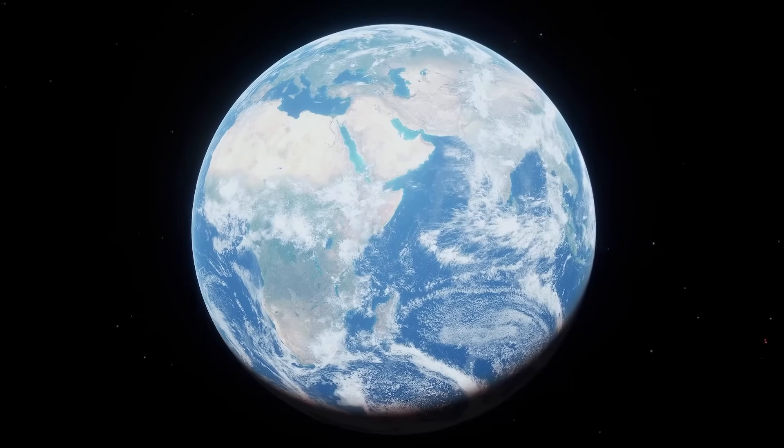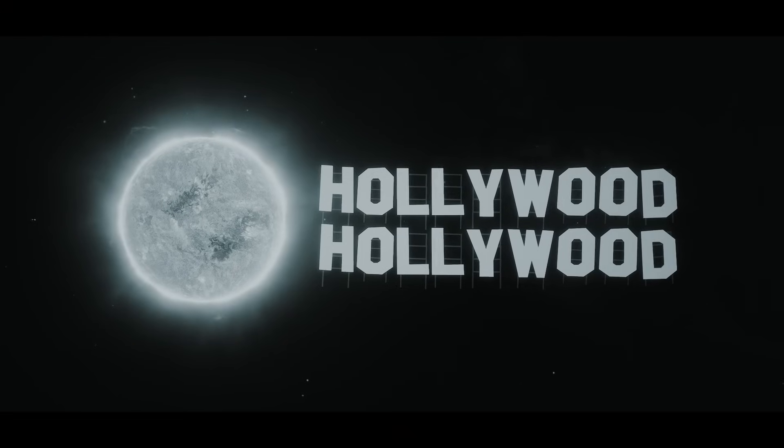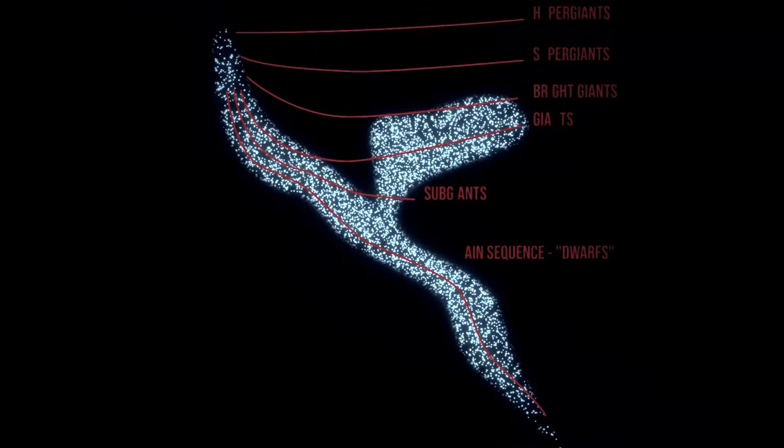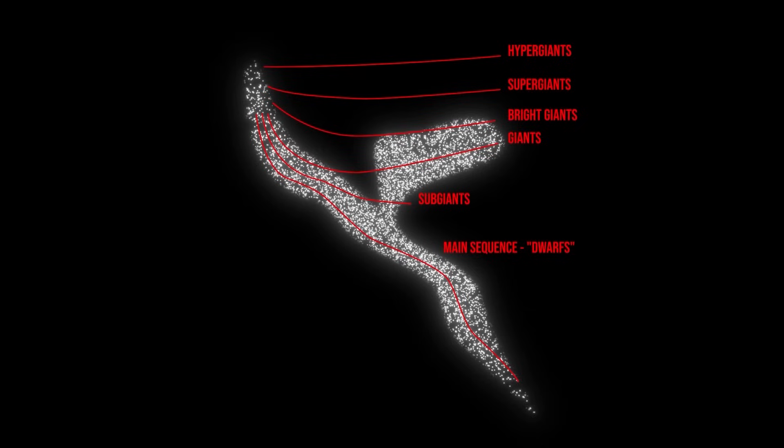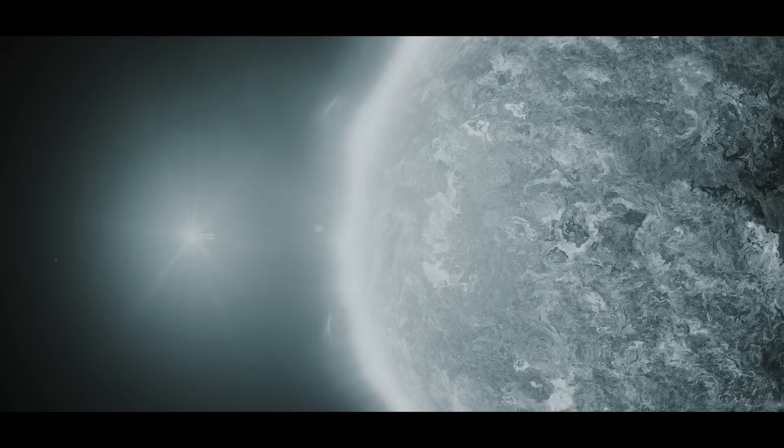If we shrink Earth down to the size of a basketball, the Sun in comparison would be as large as two Hollywood signs stacked on one another. Impressive, right? That is until you remember that our star is just a yellow dwarf, and out in the universe there are supergiants in front of which the Sun looks like a mere speck of dust.